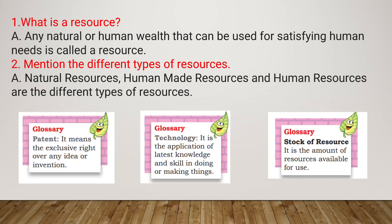What is the meaning of patent? Patent means the exclusive right over any idea or invention. Technology is the application of latest knowledge and skill in doing or making things. Stock is the amount of a resource available for use.